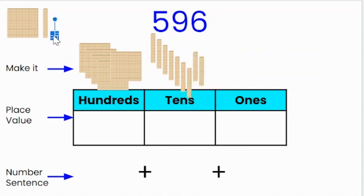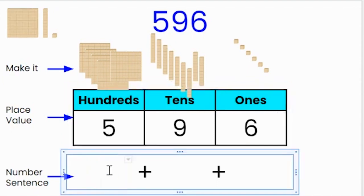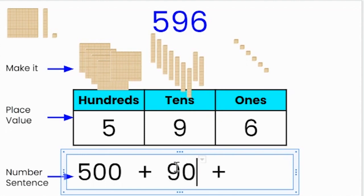And there are six ones — one, two, three, four, five, six. When I write in the place value chart, I will write that there are five hundreds, nine tens and six ones. When I write my number sentence, I know that five hundreds is five hundred, nine tens is ninety, and six ones is six. So five hundred plus ninety plus six equals five hundred and ninety-six.